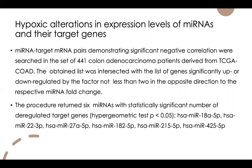We then performed the following analysis: miRNA–target gene pairs demonstrating significant negative correlation were searched within gene sets from colon adenocarcinoma patient-derived samples from the database. These lists were intersected with the list of genes significantly up- or downregulated by a factor of at least 2, in the opposite direction to the respective miRNA fold change in our experiment. This procedure returned 6 miRNAs with a statistically significant number of deregulated target genes, all of which are presented on the slide.